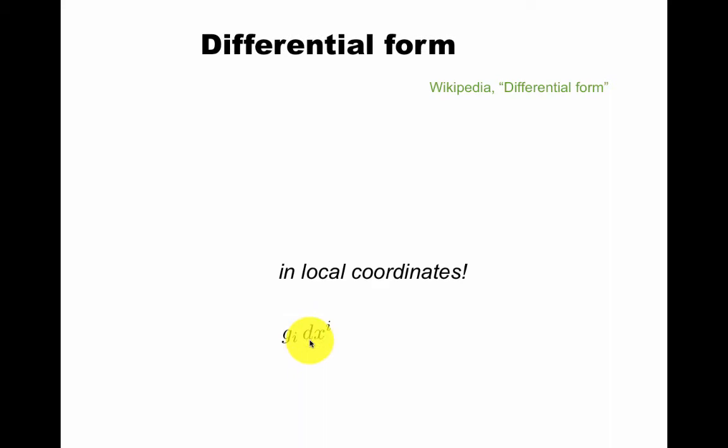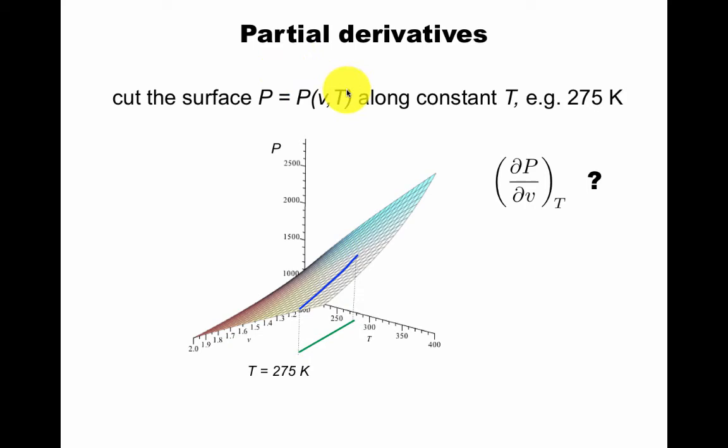But what does this really mean, this cotangent vector? In local coordinates, this is really what it is. It's just a bunch of functions times some dx^i, some kind of new meaning for Leibniz's differential. It's called a differential form. It only looks like this in local coordinates, and this concept is more general than this would have you believe.